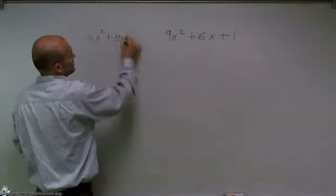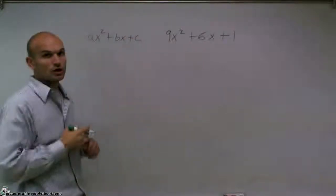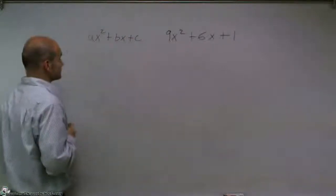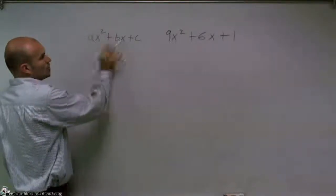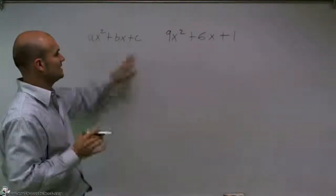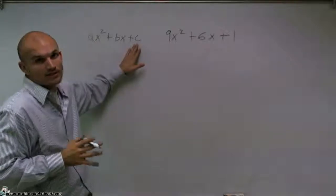So first thing, a trinomial, when we have it in our quadratic form, what we have is our coefficient of x² is a, the coefficient of x is b, and our constant, or our number, is what we're going to call c.